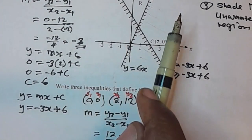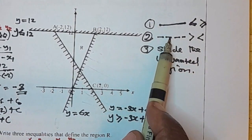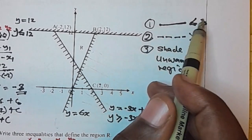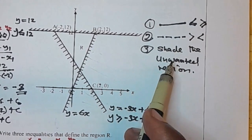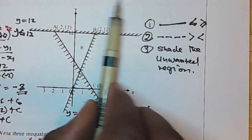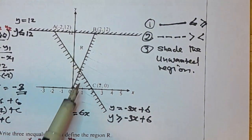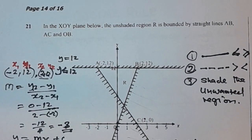What about the inequality? Ask yourself: is the line dotted or full? This line is full, so the inequality carries less than or equal to, or greater than or equal to. Which part has been shaded? The shaded part is the greater part, so the wanted part is the less part. Therefore, the inequality is y less than or equal to 6x. Thank you for watching — please subscribe, hit the like button, comment and share. See you in the next video!